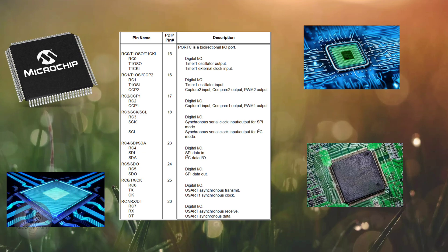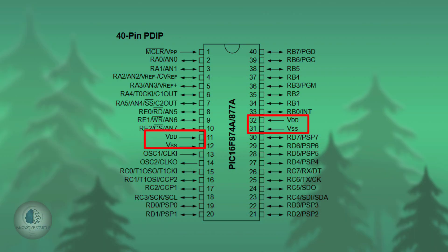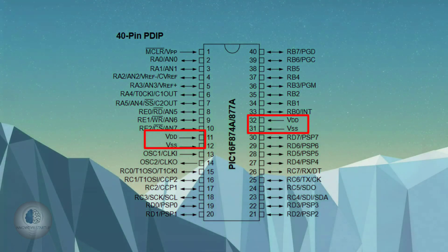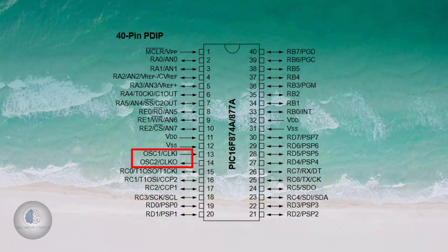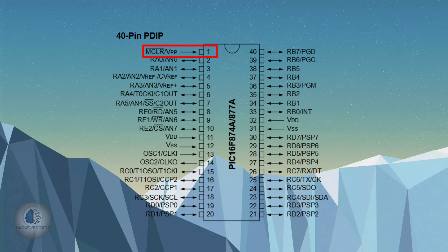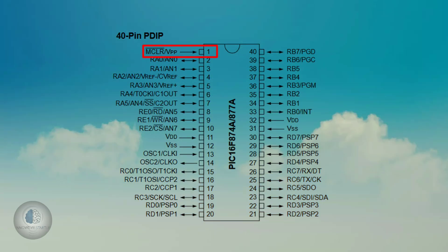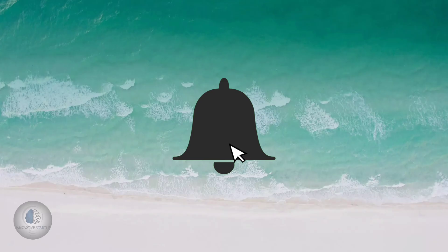The port pins include VSS and VDD for power supply, as well as OSC1 and OSC2 for the oscillator. MCLR and VPP are used for memory clear, board reset, and programming reset.